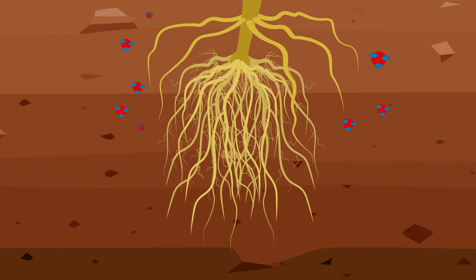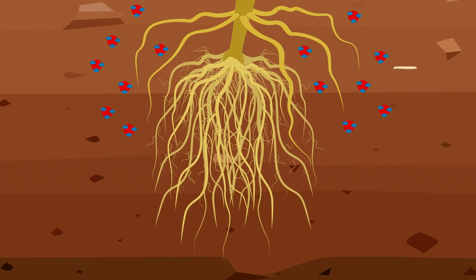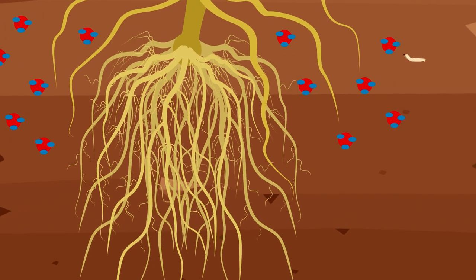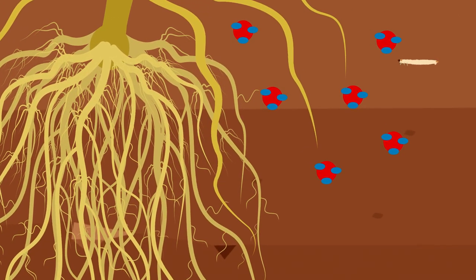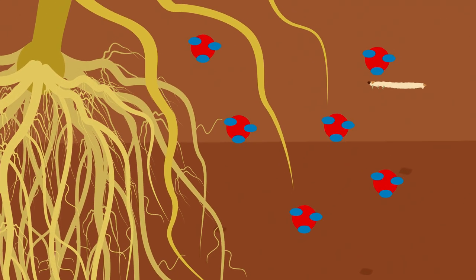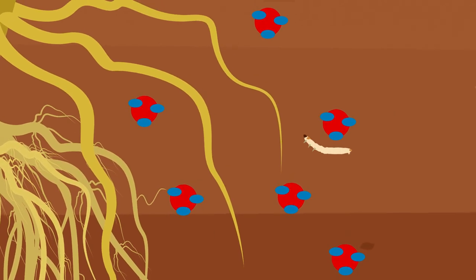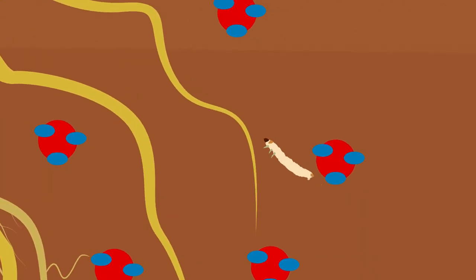Now comes the trick. The rootworm larvae are able to specifically detect these iron complexes. They follow the complexes to first find the maize plants and then the nutritious crown roots. The larvae then feed on the crown roots.